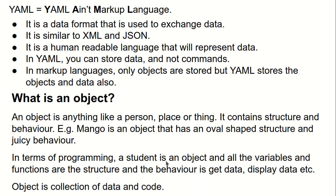Anything that contains structure and behavior is called an object. In terms of programming, a student is an object. All the variables and functions are the structure — the variables contain data like the student name, email address, school name, home, and all details relevant to the student. This data is stored inside the variables, and the functions perform functionality on that student data.